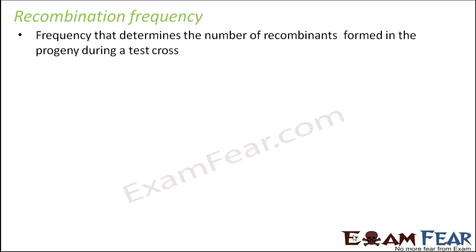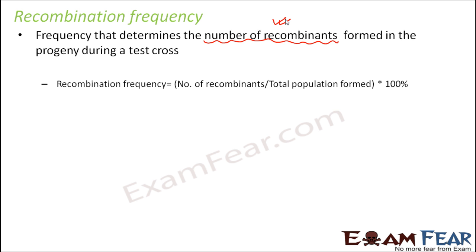With respect to this, there is a term called recombination frequency — it is the frequency that determines the number of recombinants formed in the progeny during a test cross. It keeps track of the number of recombinants. Depending on the number of recombinants, you can decide the distance between the two genes on a chromosome. Recombination frequency is calculated as: number of recombinants formed divided by the total population formed, multiplied by 100. This gives you the percentage of recombination frequency.